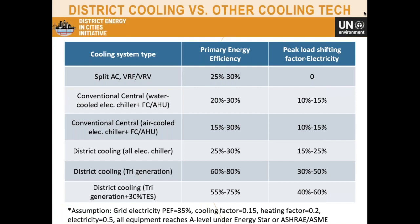This table shows a comparison between different cooling technologies, their primary energy efficiency, and peak load shifting factor. For split AC and VRV, primary energy efficiency is 25–30%. But using district cooling with tri-generation or thermal storage, you can increase this easily to 50–75% — almost double the efficiency. For split AC, you cannot shift the electricity peak load, but for district cooling — because of thermal storage and the diversity of cooling demand across different buildings — they have the ability to shift the electricity peak load by 30–60%.